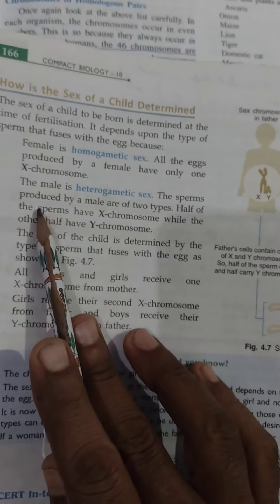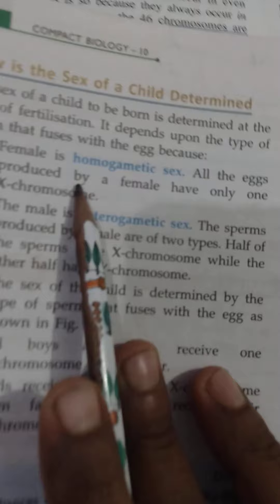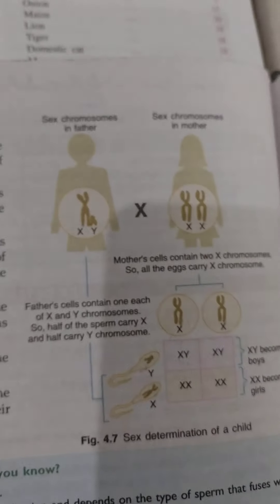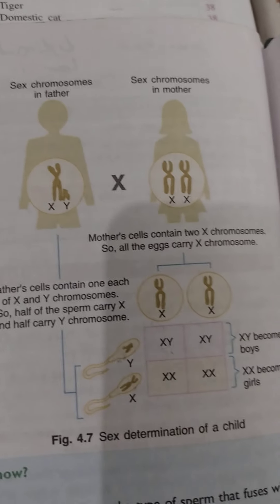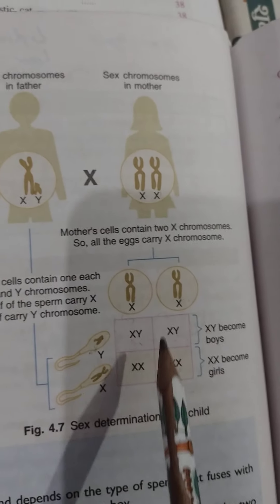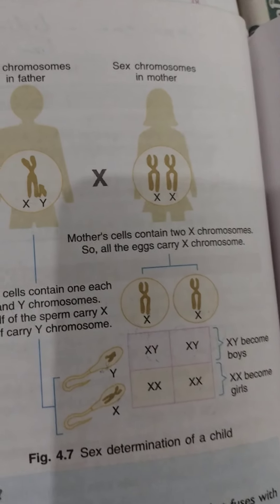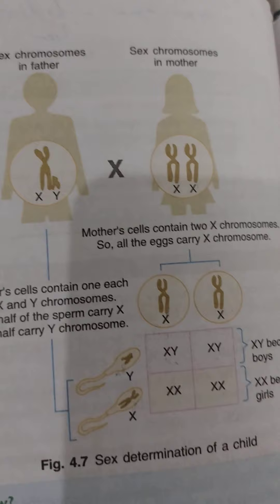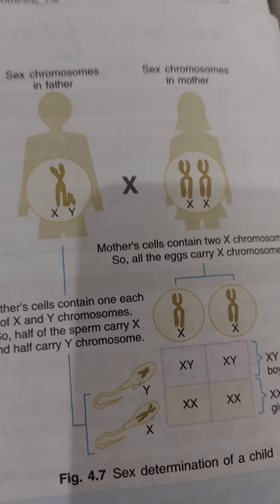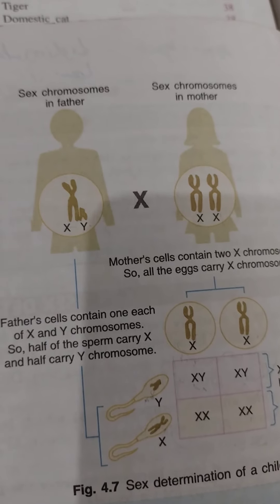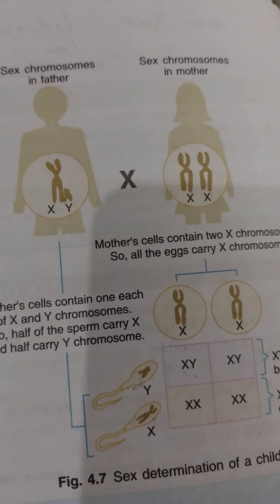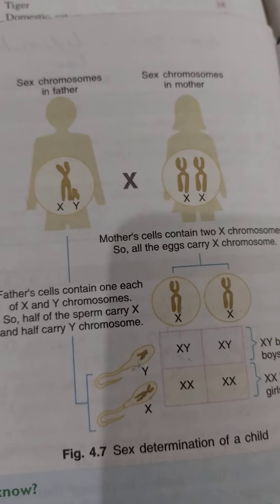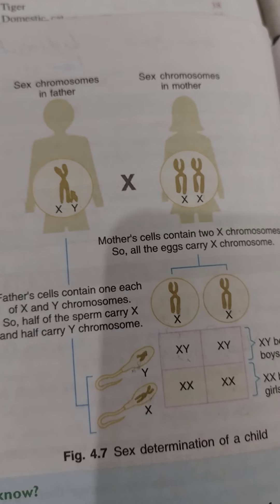To summarize: the female is homogametic and the male is heterogametic. There is a 50% chance of being male and 50% chance of being female. The important point is that the male is responsible for determining whether the child is male or female — not the female. That's all for today's video on sex determination. Thank you and have a nice day.